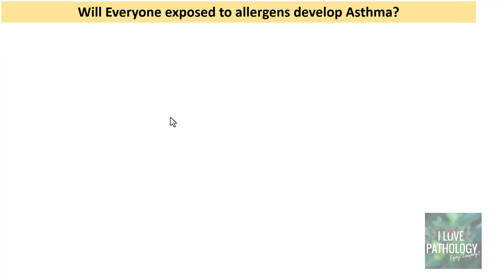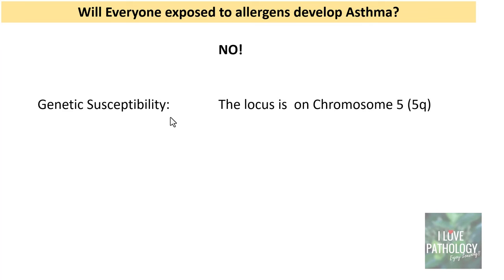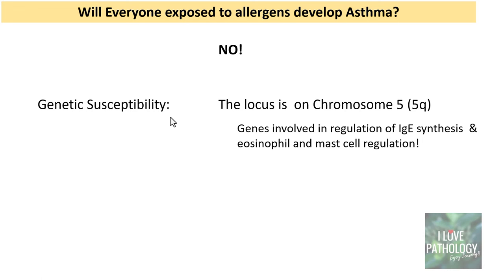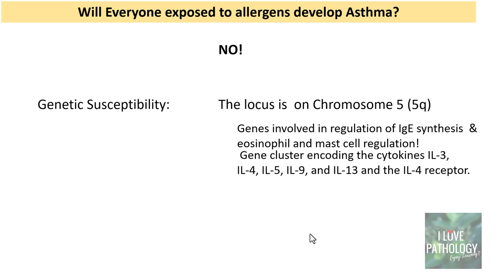An important question: will everyone exposed to allergens develop asthma? The answer is no, because a person must be genetically susceptible. The locus for this susceptibility lies on the short arm of chromosome 5, where there are genes involved in regulation of IgE synthesis and in eosinophil and mast cell development and regulation. These are clusters of genes encoding cytokines interleukin-3, 4, 5, 9, 13, and the interleukin-4 receptors — most importantly, the interleukin-13 receptor.